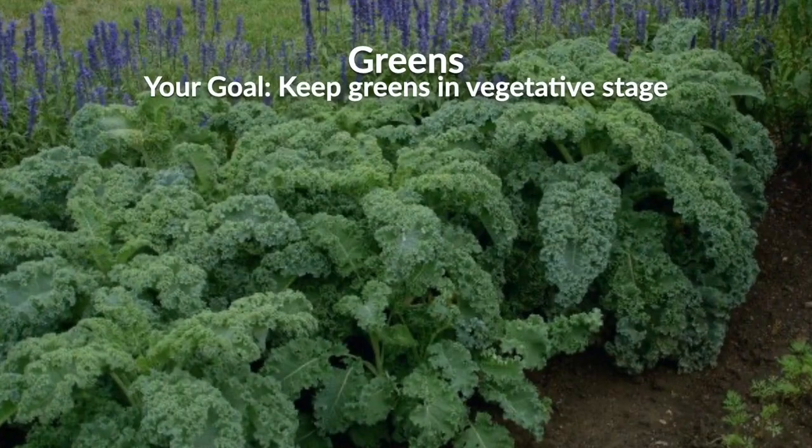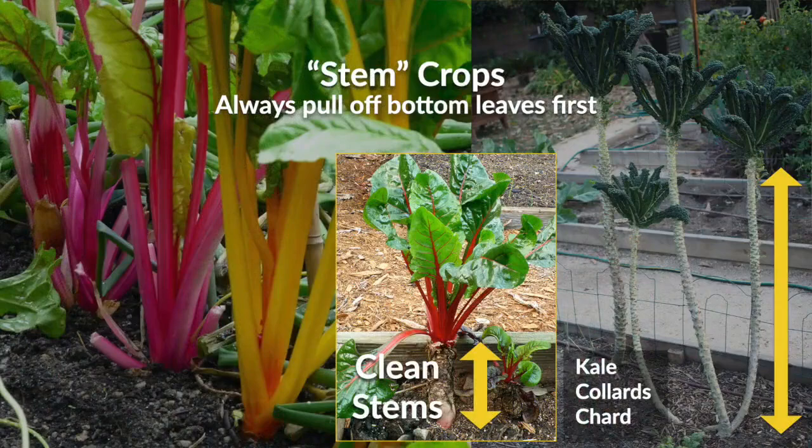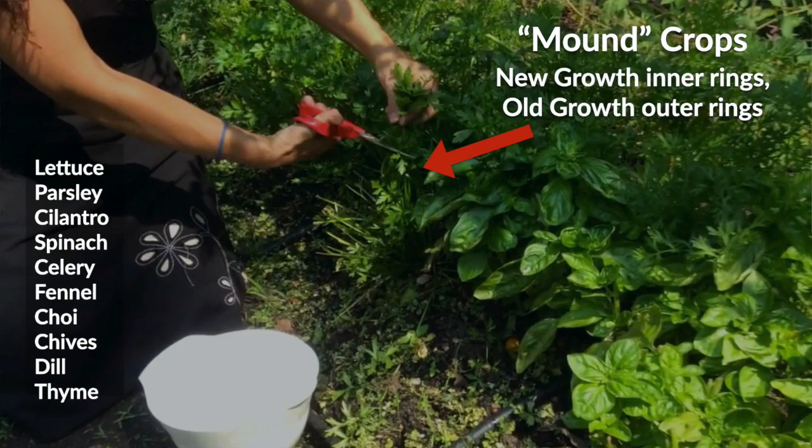For greens during the vegetative state, you want to keep them there as long as possible. There are stem greens that grow vertically — you harvest bottom leaves as they grow, and the plants eventually look like palm trees. Then there are mound greens like lettuces and spinach that grow low to the ground in a mound, where you harvest outer leaves. If mound greens grow vertically, that's not a good sign — we'll get to that.